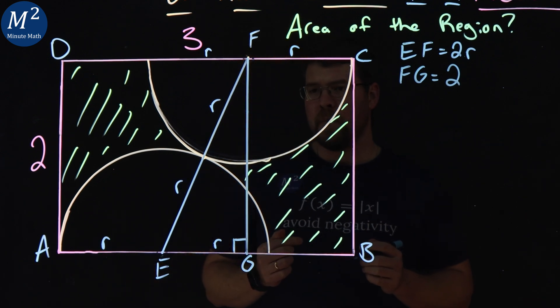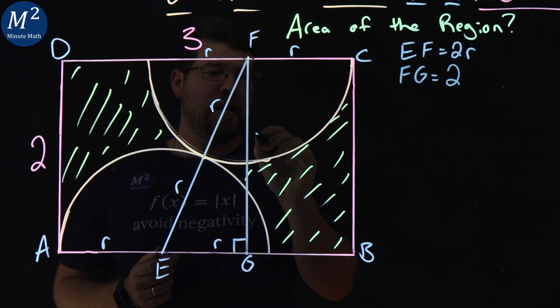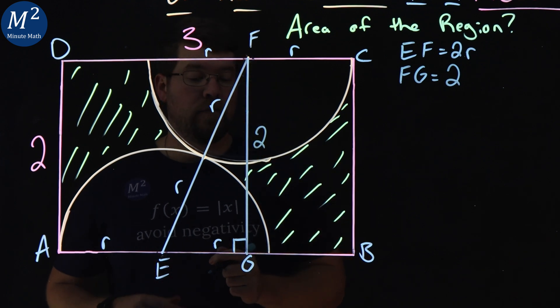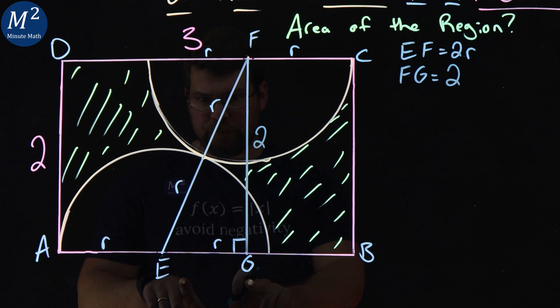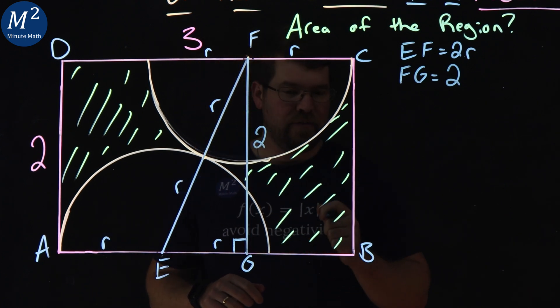And I hope you see where we're going from this. If FG has a length of 2, EF has a length of 2R, I want to find the length of EG.